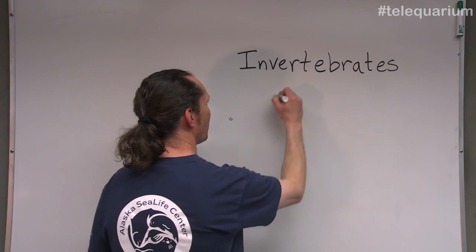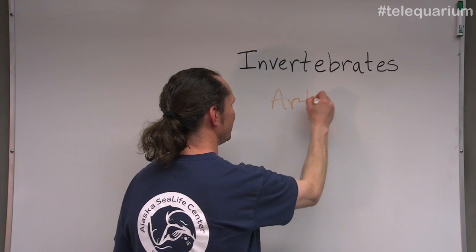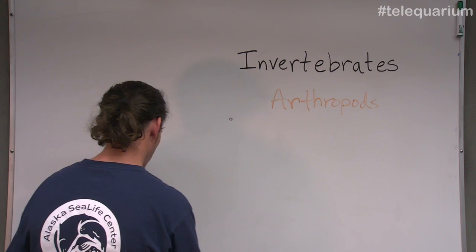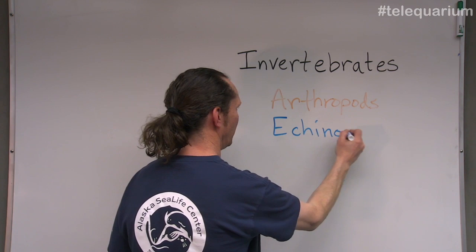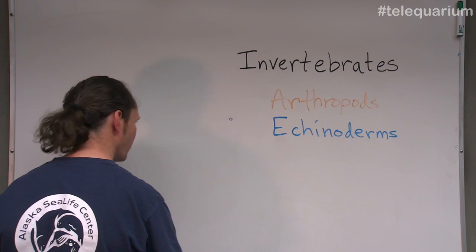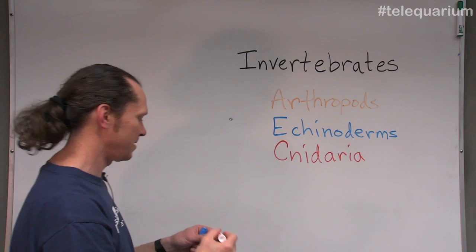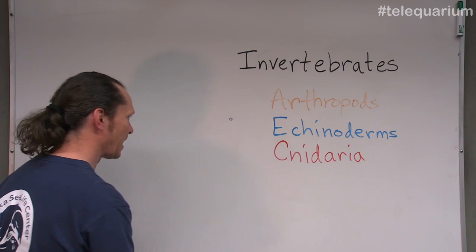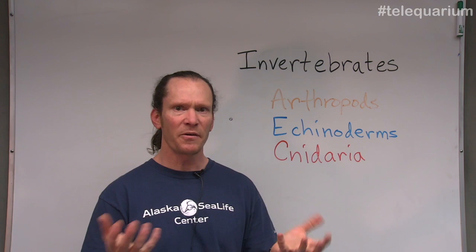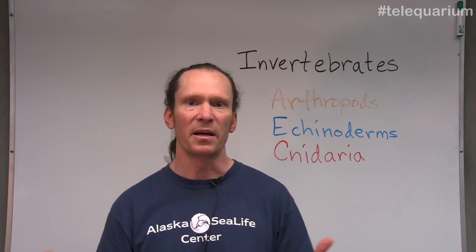We're going to talk about arthropods, echinoderms, and cnidaria. Cnidaria has a silent 'c' at the beginning. It's really hard to talk and write at the same time, it turns out. So as we discuss those three groups, I'm going to focus on just a couple of basic things about their biology, about their anatomy.